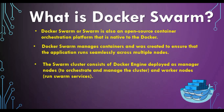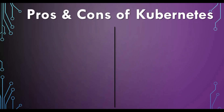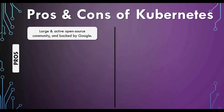Now let's talk about the pros and cons of Kubernetes and Docker Swarm so we can compare both. Starting with the advantages of Kubernetes: since it is a large, active open-source project, there is a big community working on it, and it is backed by Google. That is one of the major advantages.